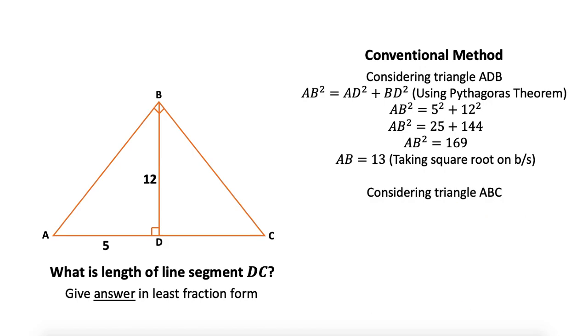Considering this whole triangle ABC, AC² = AB² + BC². Here I want to convert all of these in terms of DC, one unknown. How can I do that? AC = AD + DC, and for BC, again using Pythagoras theorem, BC² = BD² + DC².